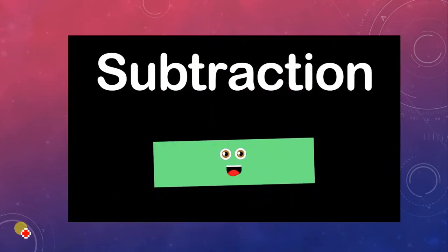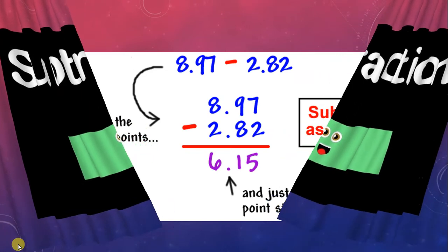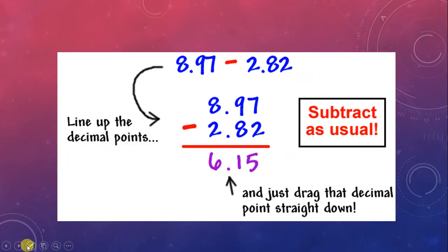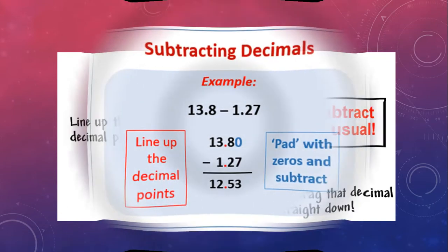Now for subtraction. The first example is 8.197 minus 2.82. Both numbers already have two decimal places after the point, so no adjustment is needed. Simple subtraction: 7 minus 2 is 5, 9 minus 1 is 8, 8 minus 2 is 6. Subtract as usual.